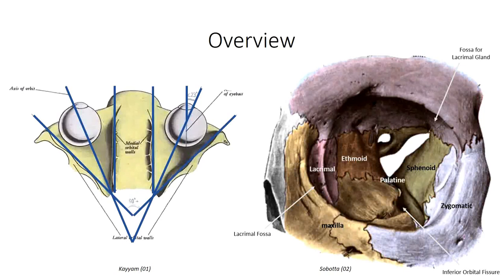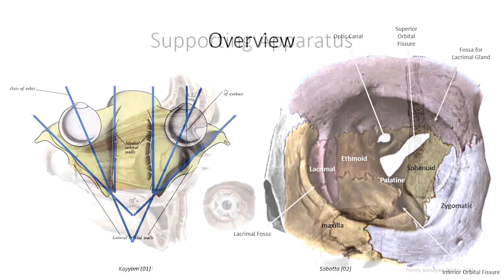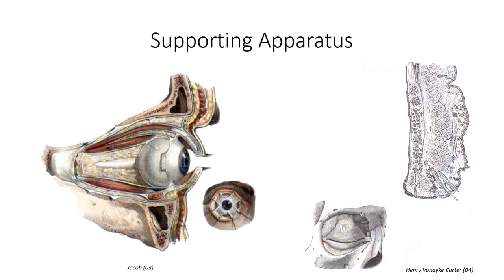Both the optic canal, which allows passage of the optic nerve, and the superior orbital fissure, which accommodates the oculomotor, trochlear, abducens, and ophthalmic division of the trigeminal nerve, are located at the apex. In addition to bony protection, the eye is supported in the orbit by a number of soft tissue structures.